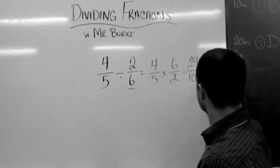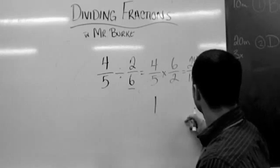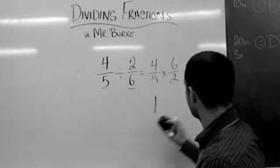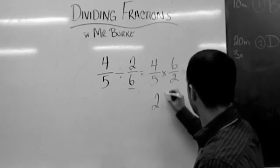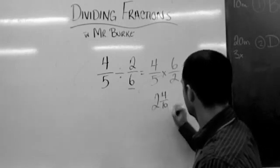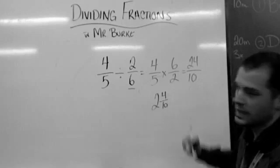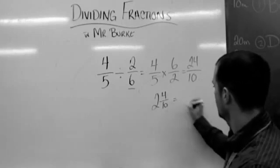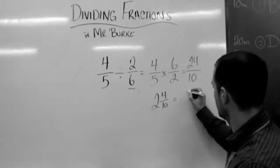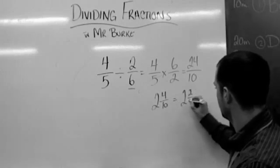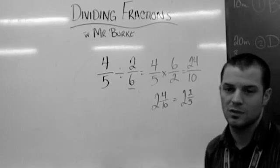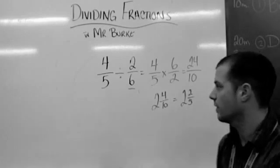So obviously there's more than 10, so that's the whole. So we've got 10. We've actually got 2, because there's 20. So it's 2 and 4 tenths. 4 and 10 are both divisible by 2. So if we go 4 divided by 2, it's going to be 2, and 10 divided by 2 is 5. So 2 and 2 fifths is the answer in simplest form and in mixed number.